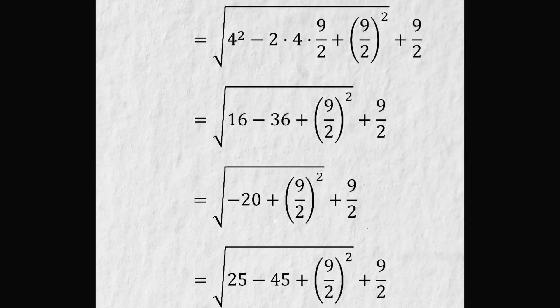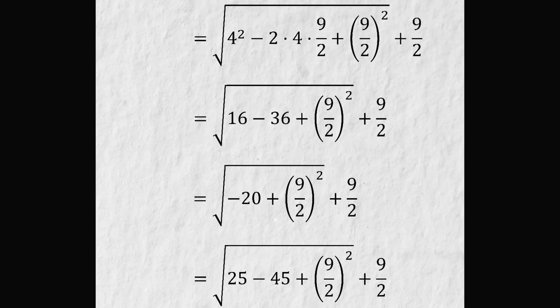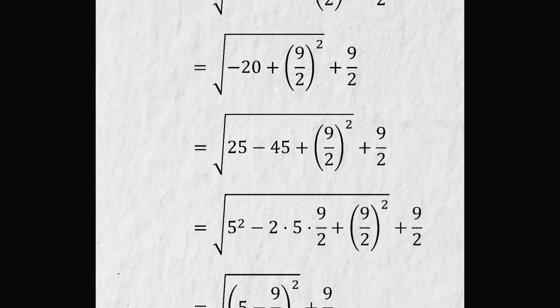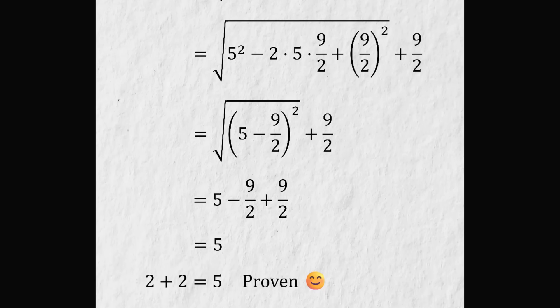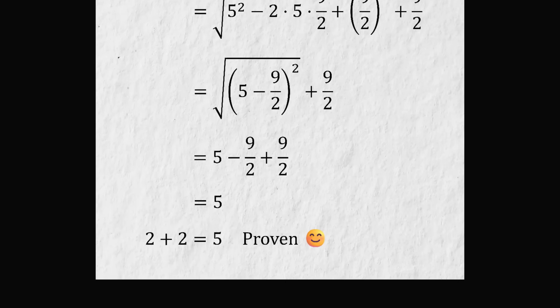This is equal to the square root of 4 squared minus 2 times 4 times 9 over 2 plus the square of 9 over 2, then we add 9 over 2. This equals the square root of 16 minus 36 plus the square of 9 over 2, plus 9 over 2. This equals the square root of minus 20 plus the square of 9 over 2, plus 9 over 2. This equals the square root of 25 minus 45 plus the square of 9 over 2, plus 9 over 2. This equals the square root of 5 squared minus 2 times 5 times 9 over 2 plus the square of 9 over 2, plus 9 over 2. This equals the square root of the square of (5 minus 9 over 2), plus 9 over 2. And this equals 5 minus 9 over 2 plus 9 over 2, which equals 5. So 2 plus 2 is equal to 5 — proven.